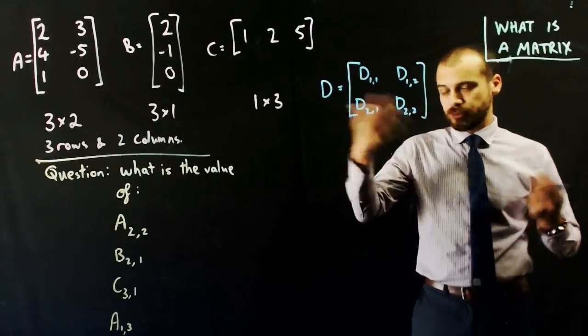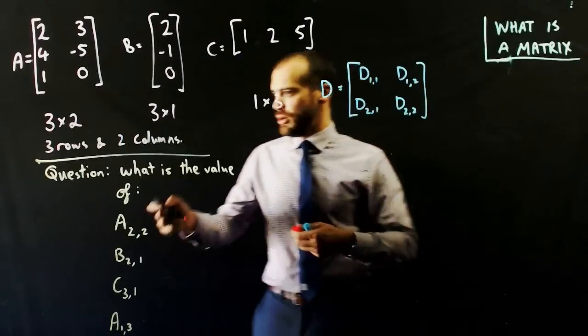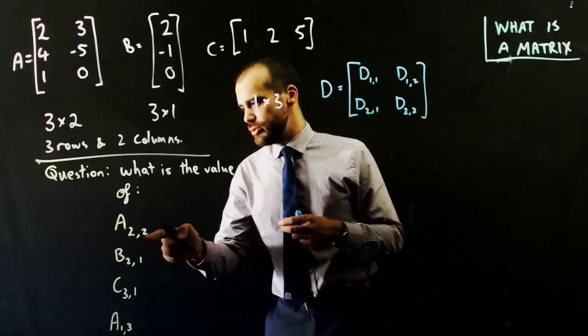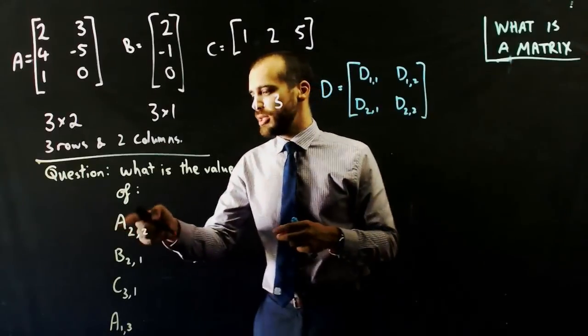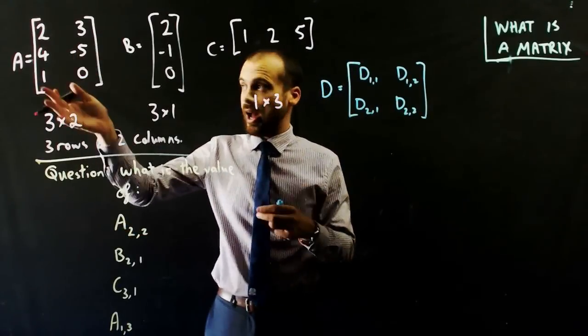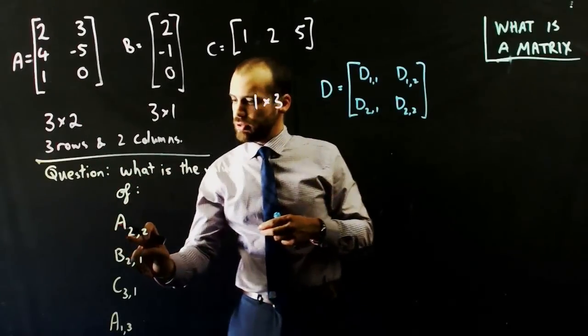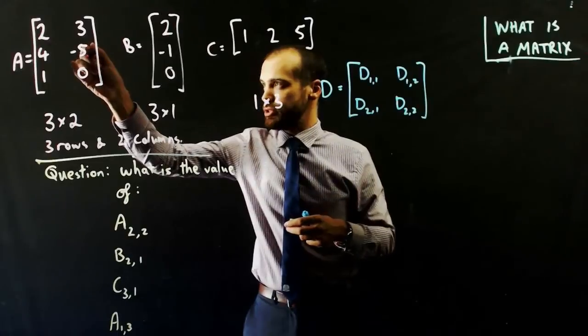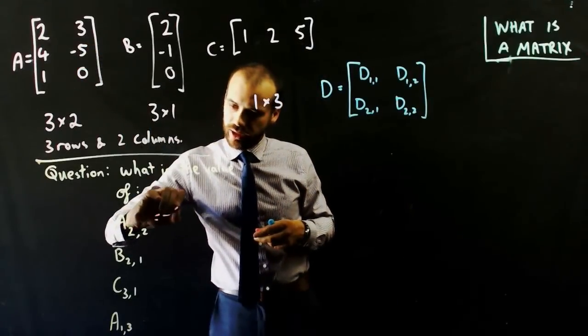So based on this, some questions I might ask you are, what is the value of element A2, 2? Okay, so element A2, 2 is the element in matrix A from the second row and the second column. So down 2, across 2. Negative 5.